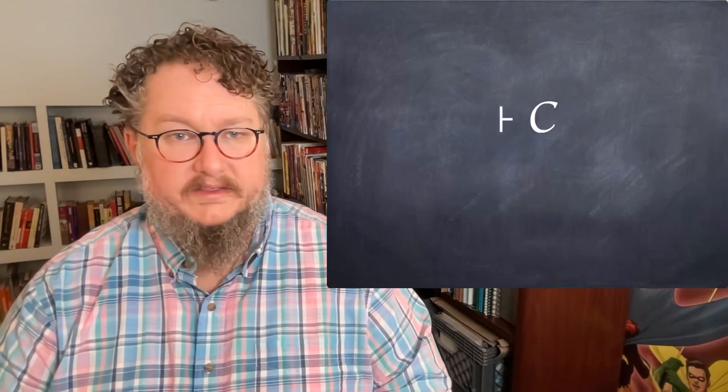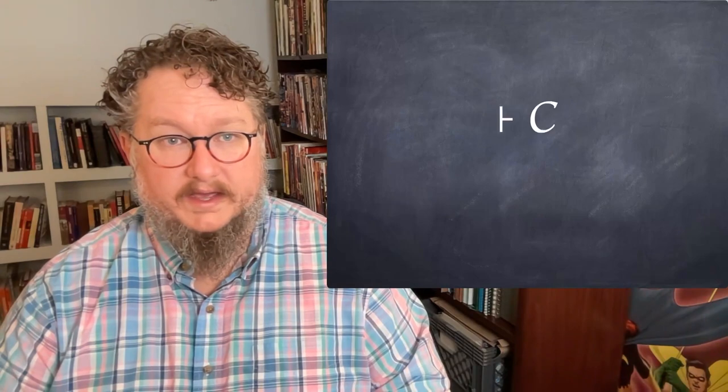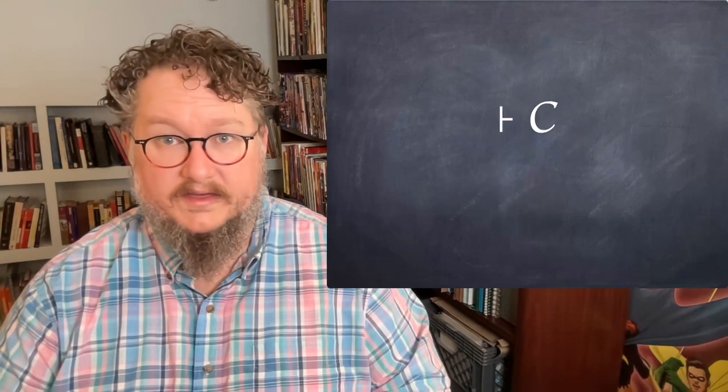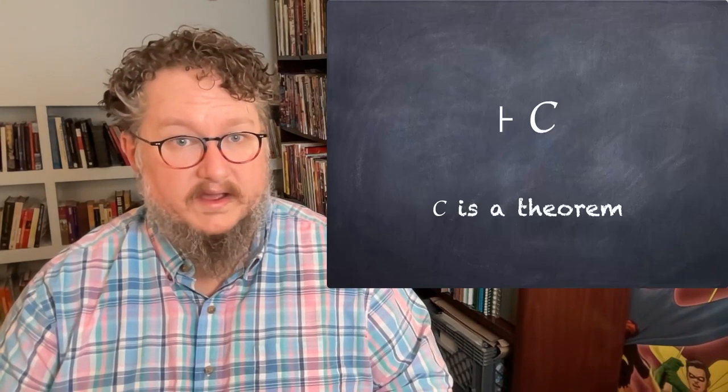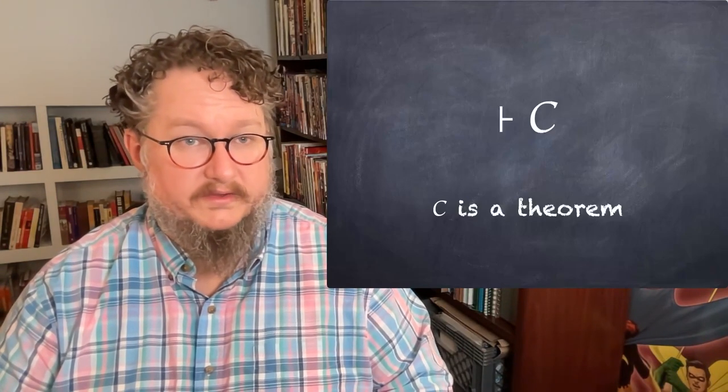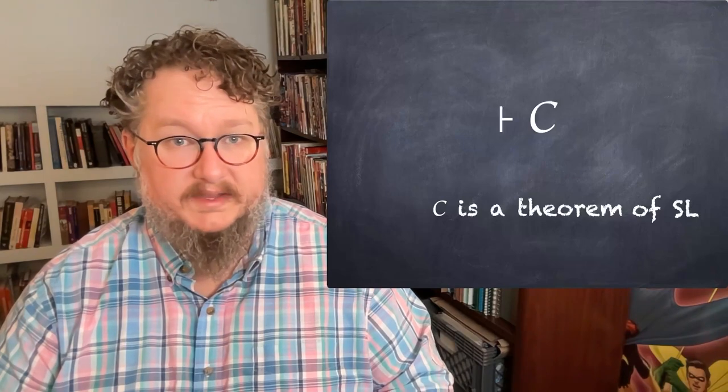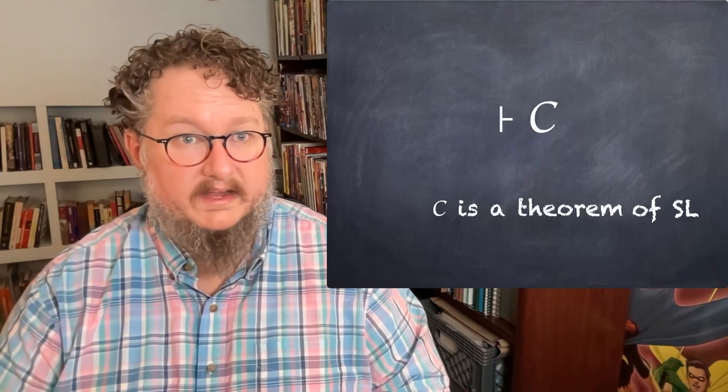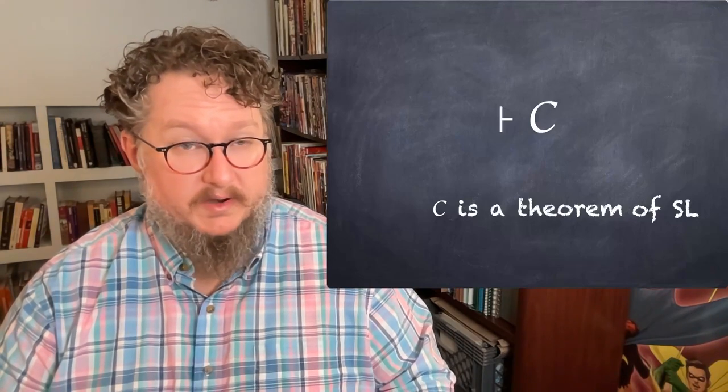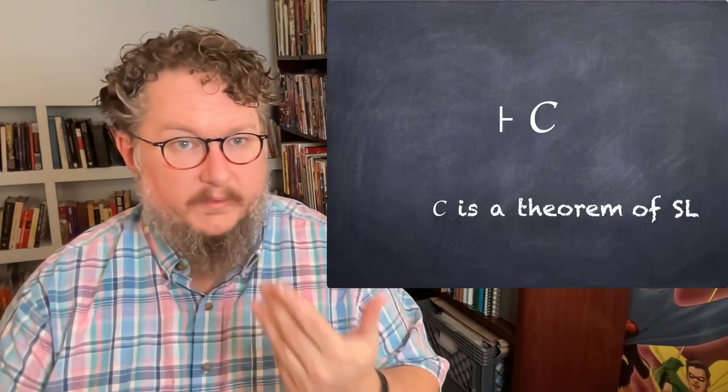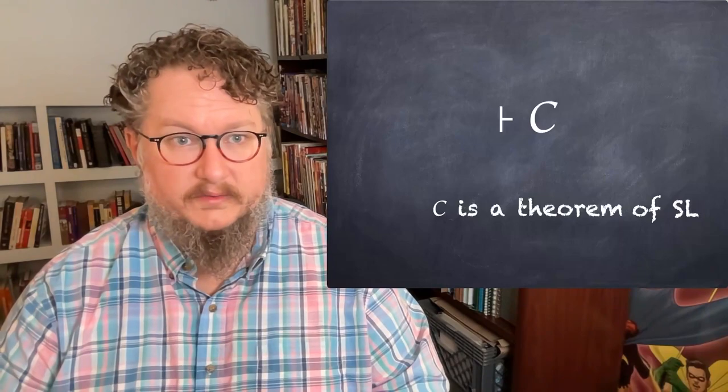Sometimes you see the turnstile here with a sentence on the right but nothing on the left. This means that C is a theorem of the proof system we're using. So for our purposes right now, it means that C is a theorem of SL. A theorem is like a tautology. You can prove it without any premises. It means it's always true no matter what premises you assume.